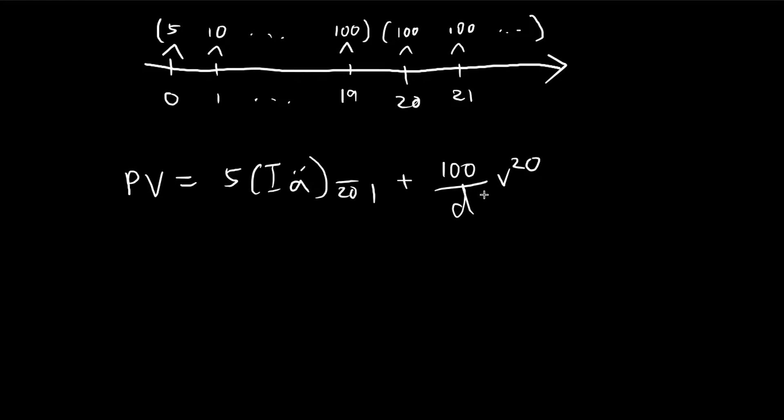So essentially, we can just substitute numbers into this formula, and then we can get our answer. But then we can actually simplify this problem a little bit. So let's write out the formula for the increasing annuity, divided by d.